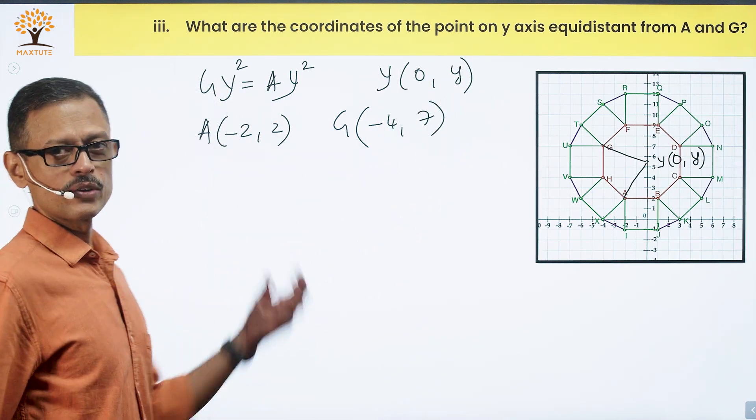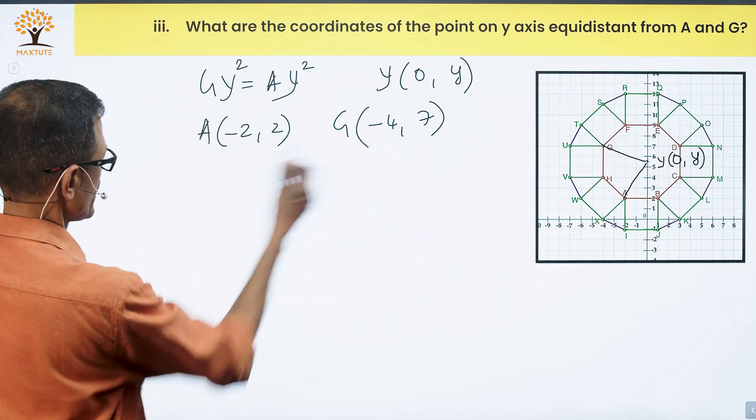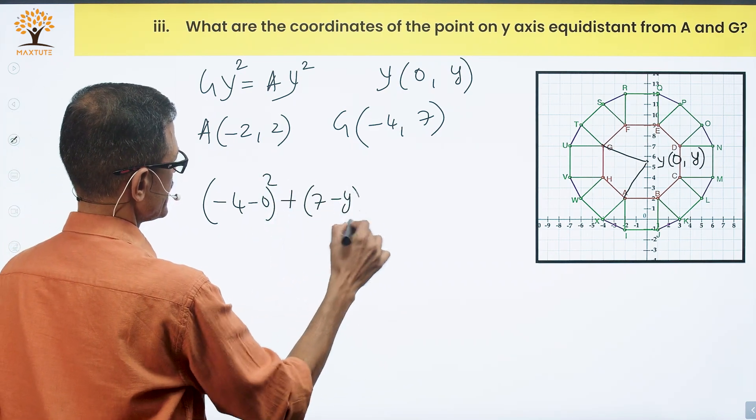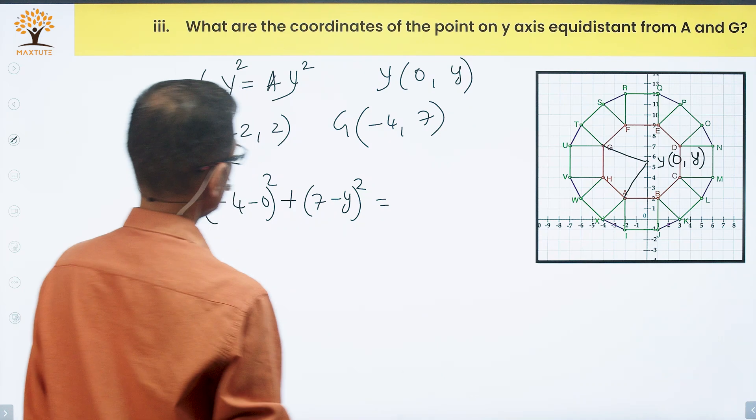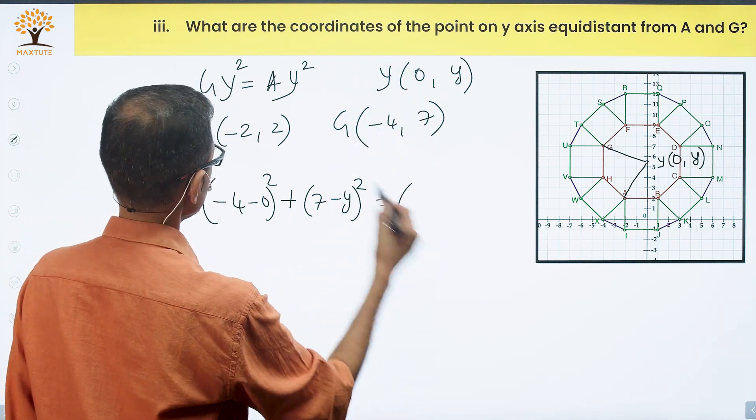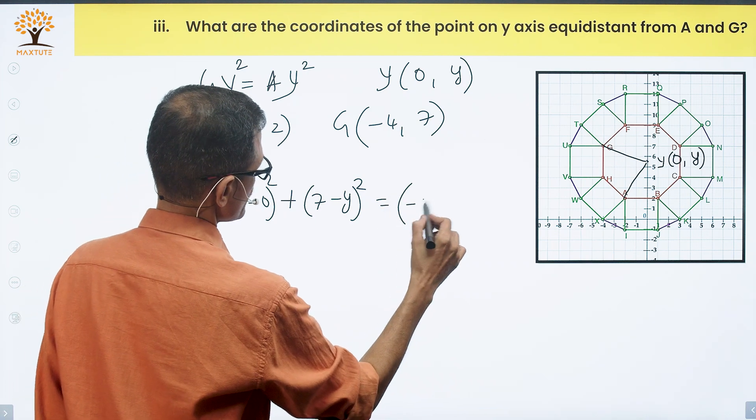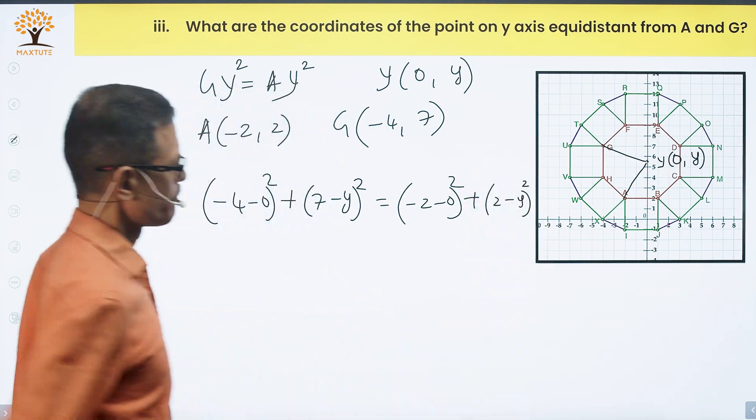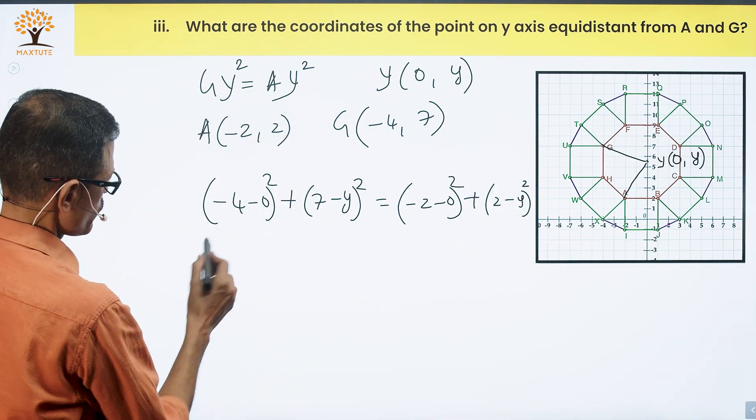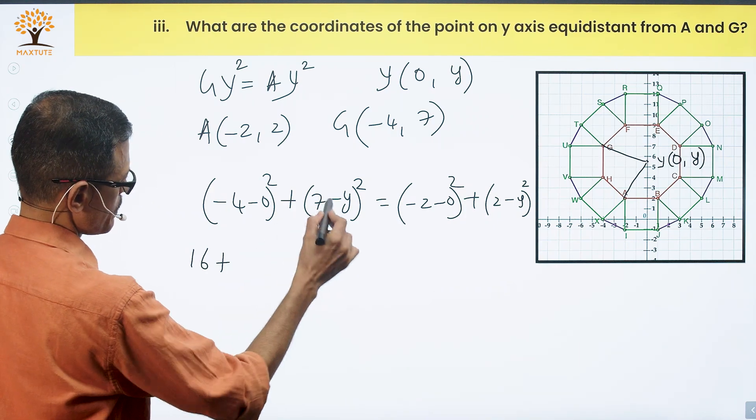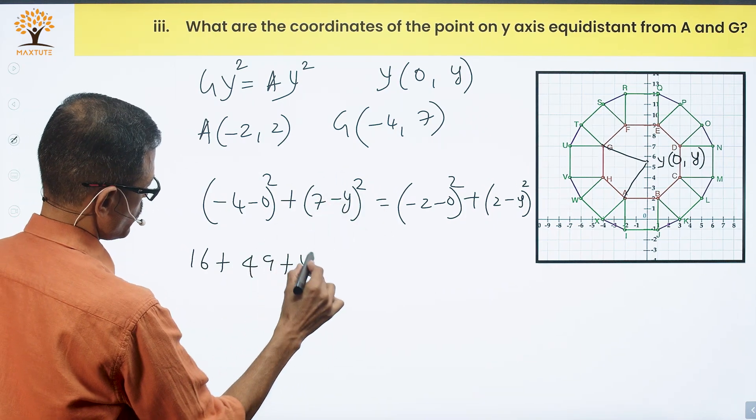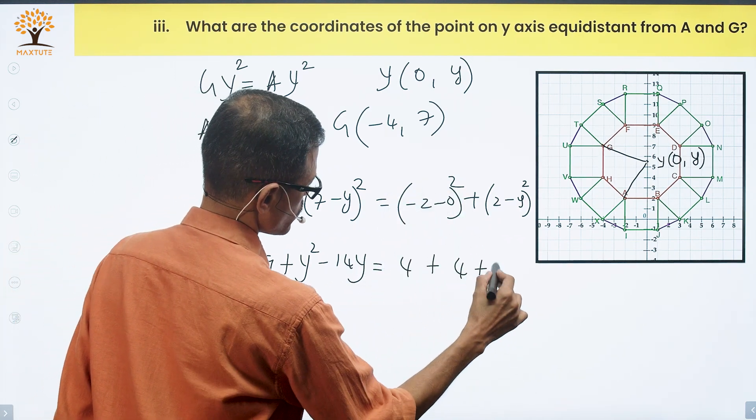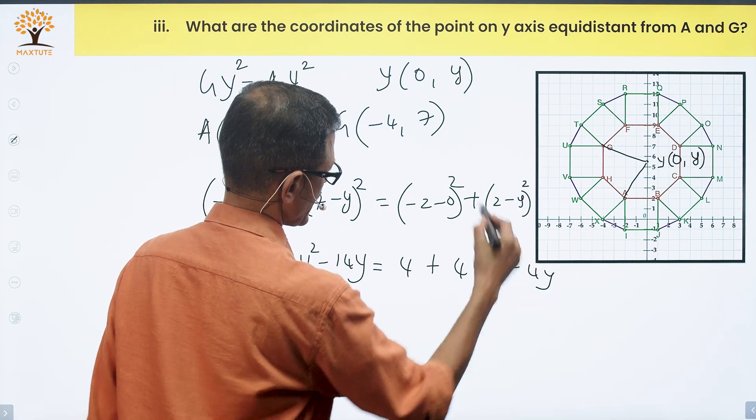GY square, if Y coordinates are 0, Y, is square root of (X2 minus X1) whole square plus (Y2 minus Y1) whole square. This is (minus 4 minus 0) whole square plus (7 minus Y) whole square. This equals AY, which is (minus 2 minus 0) whole square plus (2 minus Y) whole square. Squaring: minus 4 square is 16, 49 plus Y square minus 14Y equals 4 plus 4 plus Y square minus 4Y.